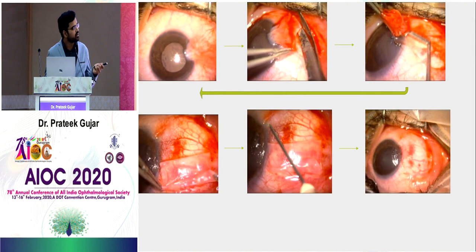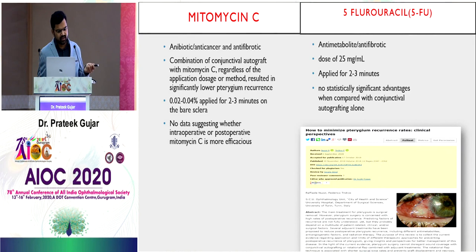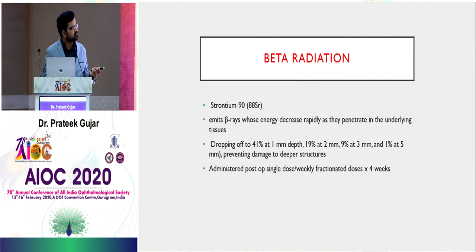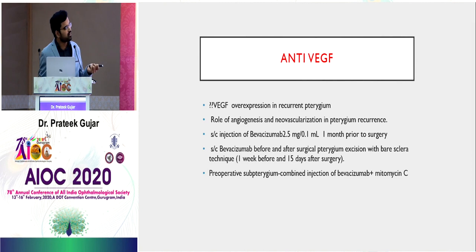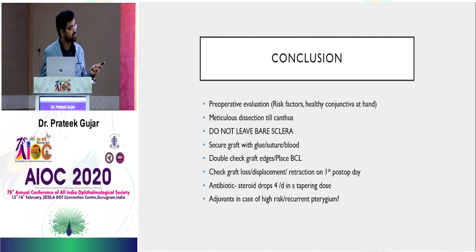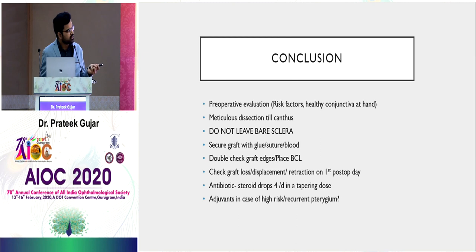Regarding anti-metabolites: mitomycin C, 5-fluorouracil, and beta radiation have been described, but I have no personal experience and colleagues are also not using them. Anti-VEGF: a few people have tried it — it must be given as subconjunctival injection one month prior to surgery, not at the time of surgery. Key take-home points: use healthy conjunctiva, perform meticulous dissection including at the canthus, do not leave bare sclera, secure the graft with glue, suture, or autologous blood, double-check graft edges, manage graft loss or displacement on the first post-op day, and use antibiotic-steroid drops four times in a tapering manner with lubricating drops.